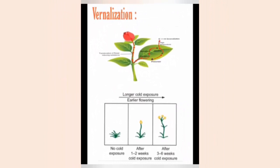Vernalization. Treating a plant with low temperature for subsequent growth and flowering is called vernalization. Vernalization is also called yarovization, chilling treatment, or cold treatment. Vernalization reduces vegetative period and induces early flowering in plants. Based on vernalization, there are two types of plants: winter and spring variety.